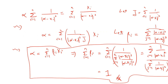Let J equal the sum from i=1 to n of 1/|alpha − x_i|². Then alpha equals (1/J) times the sum of x_i/|alpha − x_i|². Defining beta_i = 1/(J · |alpha − x_i|²), we can write alpha as the sum of beta_i · x_i. Each beta_i is clearly greater than zero since J > 0, and an easy calculation shows that the sum of all beta_i equals one.